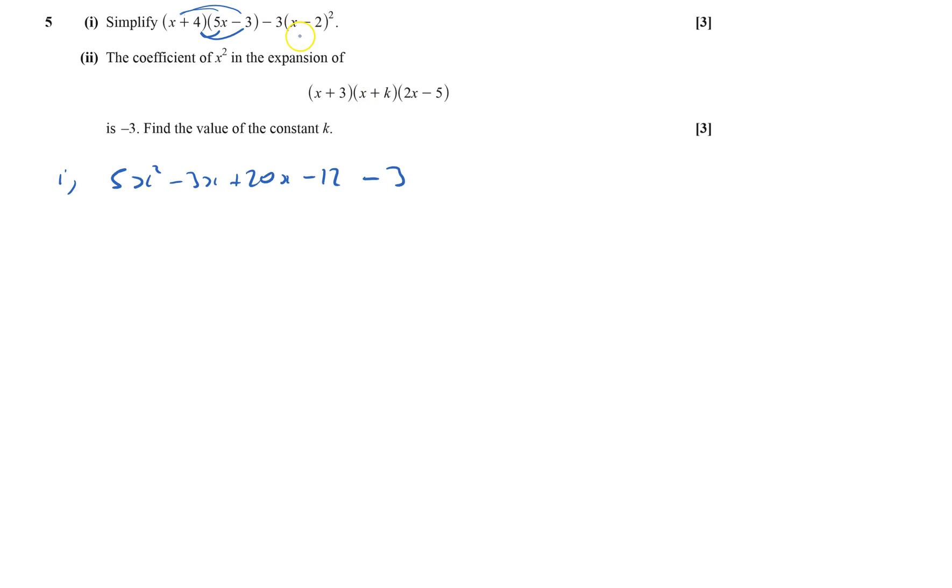It's going to be minus outside the bracket, got to be careful here. x minus 2 squared is going to be x squared minus 4x plus 4. It doesn't equal anything, it's just an expression.